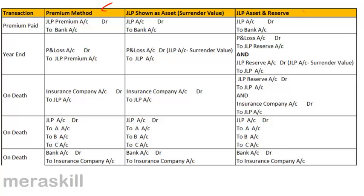Let us first discuss the premium method. Under the premium method, when we pay the premium, the amount is treated as an expense — there is no asset in the books. So when you pay premium: premium account debit to bank, and transfer it to the profit and loss account. This is nothing but an expense.